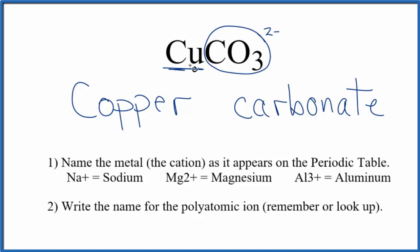We said copper is a transition metal, so to figure out the charge on copper, we have to look at what it's bonded to. We said the carbonate is two minus, copper has to be two plus for these numbers to add up to zero, to give a net charge of zero.